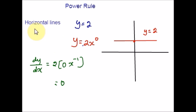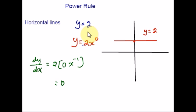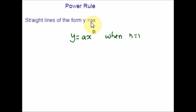This is applicable for any constant — first rewrite it in exponent form, identify a and n, then apply the differentiation formula. The graph of y equal to any constant has a gradient of 0. Next, we discuss straight lines of the form y equal to a times x. Functions of this form y equal to a times x raised to n with n equal to 1 can be written as y equal to a x. These functions represent straight lines with gradient a which pass through the origin. As the gradient of any line is given by its derivative, the derivative of y equal to a x must equal a.